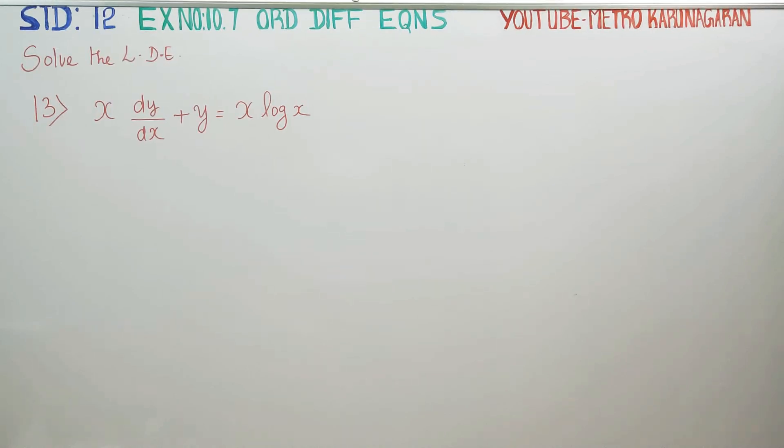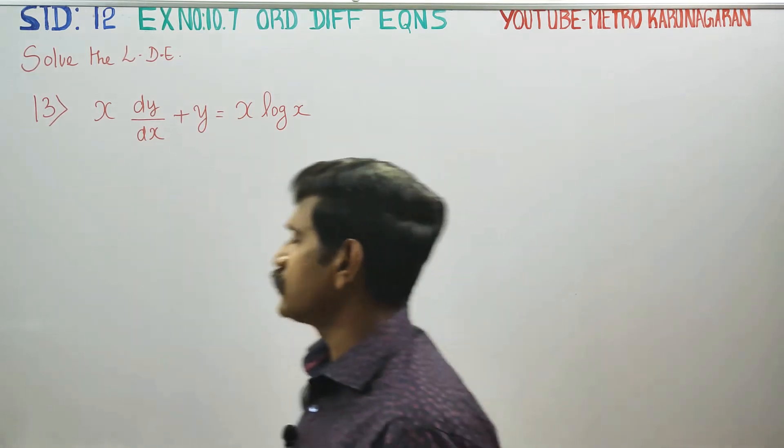Dear 12th standard students, in Exercise number 10.7, sum number 13: x dy by dx plus y is equal to x log x.